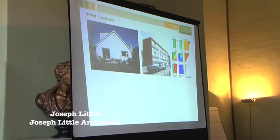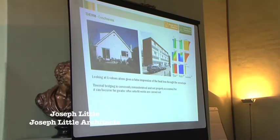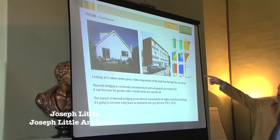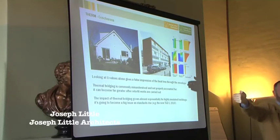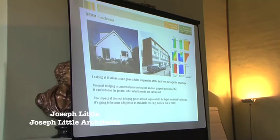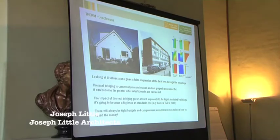Conclusions on thermal bridging: looking at U-value alone gives a false impression of heat loss through the thermal envelope. Thermal bridging is commonly misunderstood and not properly accounted for. It can become far greater after retrofit works are carried out. The impact of thermal bridging grows almost exponentially for highly insulated buildings — if one junction is near another, all those orange areas can start holding hands, and you can end up with a lot of heat loss that simply isn't finding its way onto your SBEM page, IES page, or DEEP page. There'll always be tight budgets and compromises, but that's why we need to know exactly how to spend the money and why. Therm is a great free tool to do that — training will be beneficial.